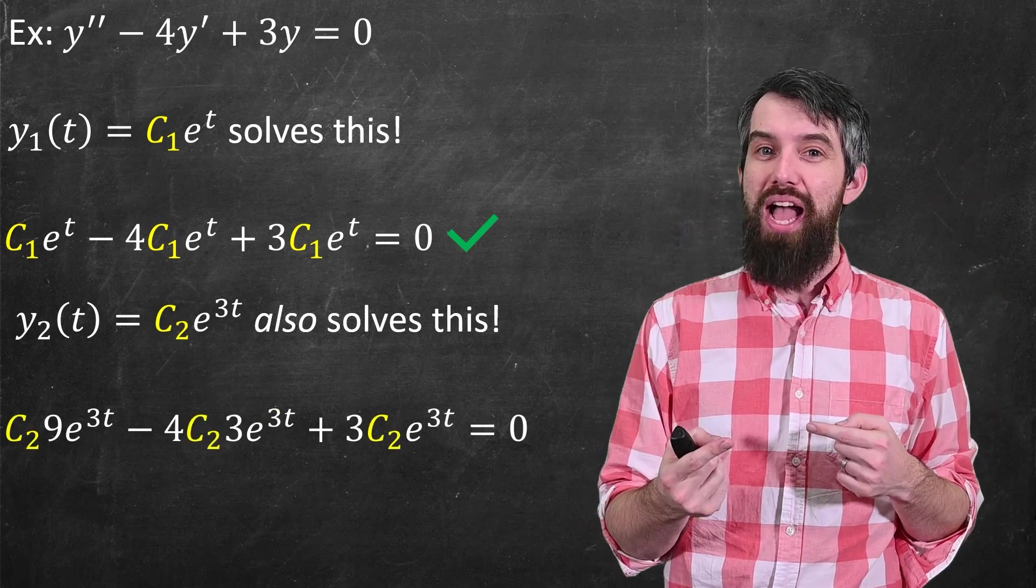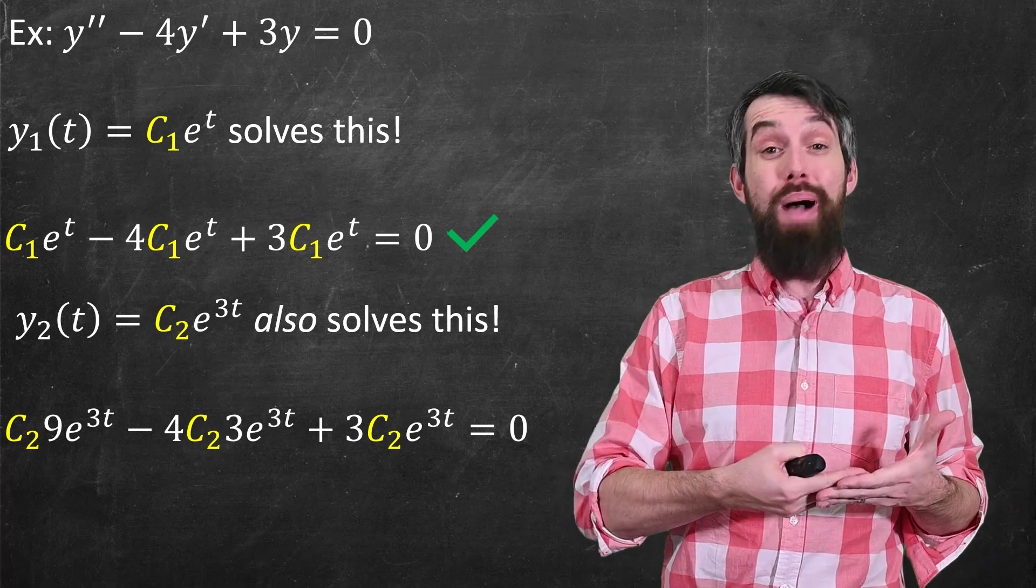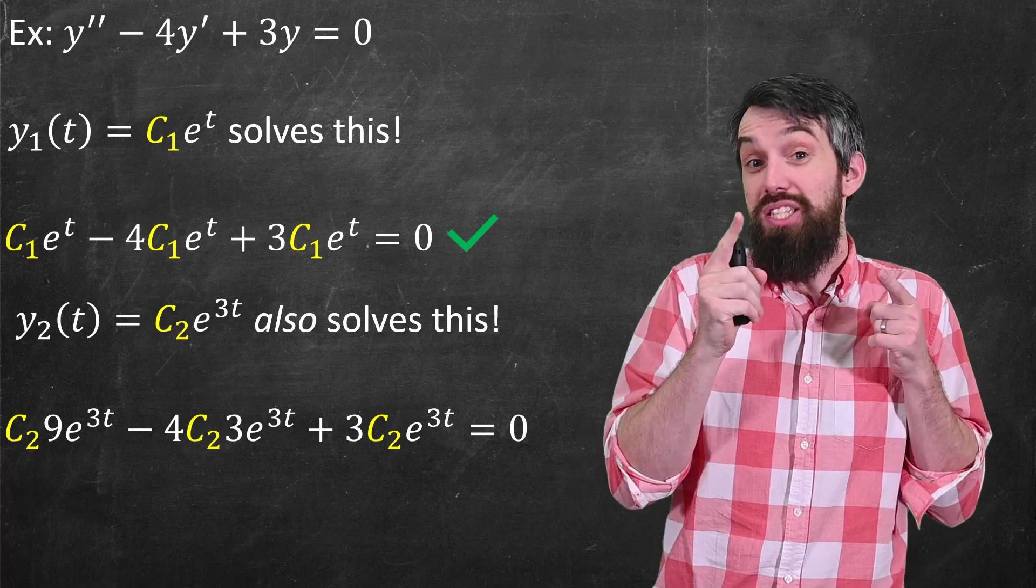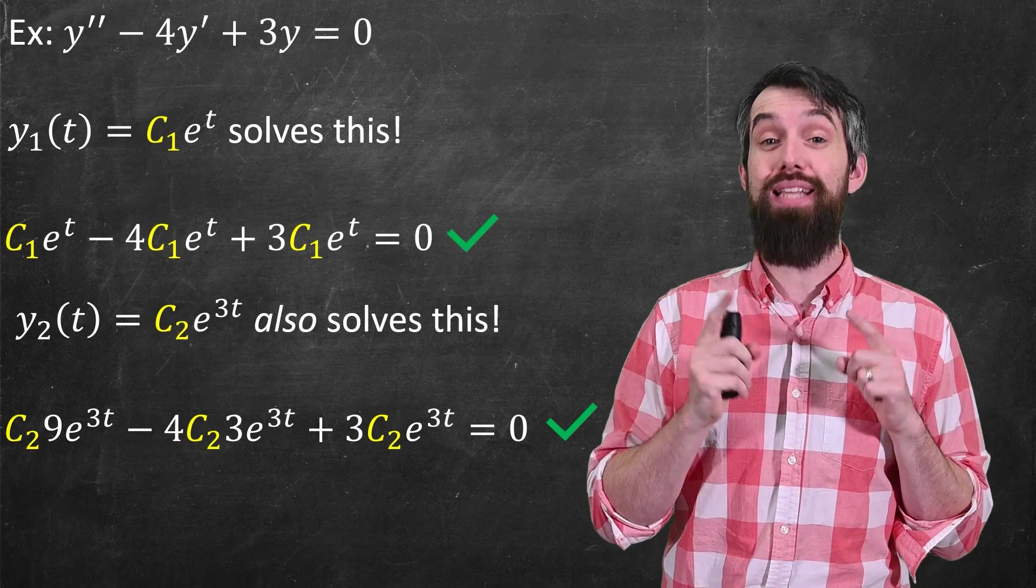Indeed, plug it in in the same way, and you're going to get 9 times the constant e to the 3t, then minus 12 the constant e to the 3t, and then plus 3 the constant times e to the 3t, which adds up to 0. It's again a solution.